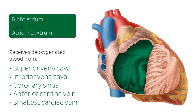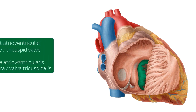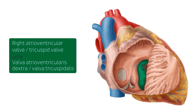Once the right atrium receives deoxygenated blood from these vessels, it will be pumping it into the right ventricle through the next structure we're going to highlight now on the screen in green: the right atrioventricular valve, also known as the tricuspid valve.